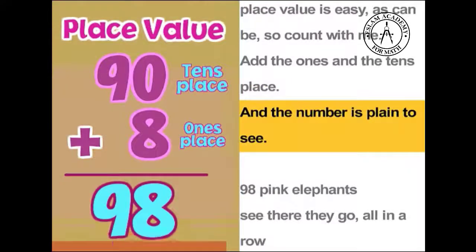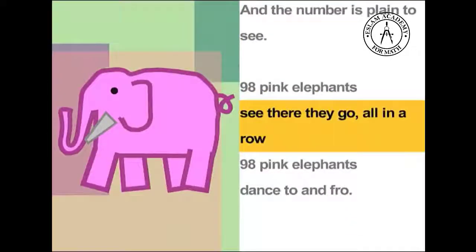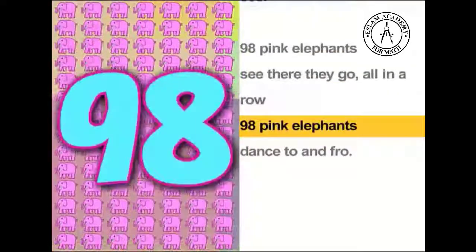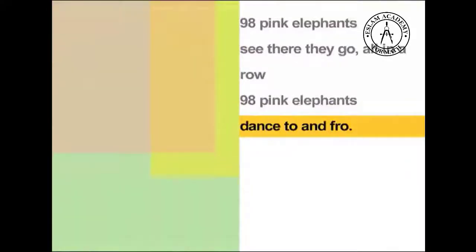Oh, place value is easy as can be, so count with me. Add the ones and the tens place, and the numbers plain to see. 98 pink elephants, see there they go, all in a row. 98 pink elephants dance to and fro.